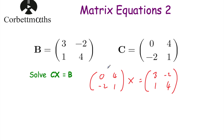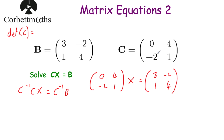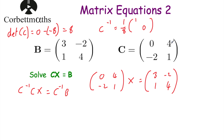We want to find X, so we need to get rid of C by multiplying both sides by the inverse of C. The inverse of C requires the determinant first. The determinant of C is 0 times 1 minus 4 times negative 2, which is 0 minus negative 8, equal to 8. So the inverse of C equals one-eighth times 1, 0, negative 4, 2 — swapping the diagonal elements and changing the signs of the off-diagonal ones.